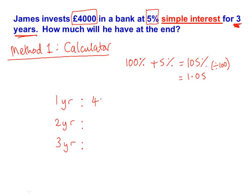In the first year, we start with 4,000 and times by 1.05. Type this into a calculator and we get the answer of 4,200 — that's how much money we have at the end of the first year. Now this is where we do something a little bit different to compound interest: we look at how much it has gone up in that year. We started with 4,000 and went up to 4,200, so we've gone up £200. Simple interest means that every year we go up by the same amount — £200 every year.